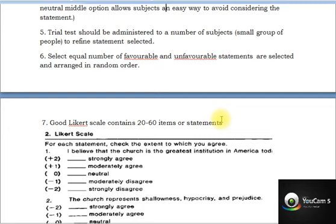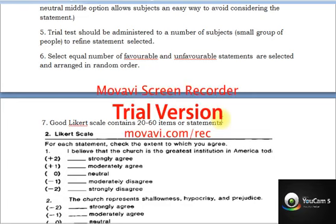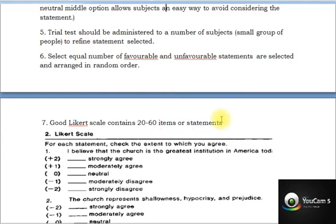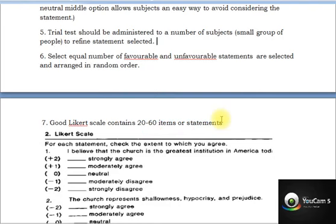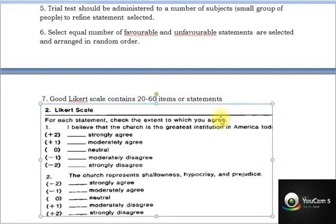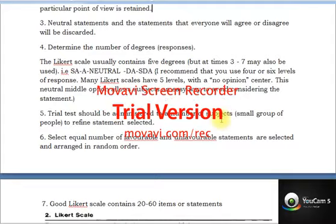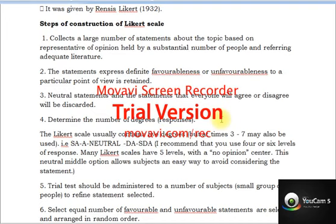A trial test should be administered to a number of subjects before using the scale, to ensure statements are clear and understandable. You may create a statement that is misunderstood by respondents, so a pilot study helps confirm clarity. Select an equal number of positive and negative statements — if preparing 20 items, make 10 positive and 10 negative — so calculations come out well. A good Likert scale should contain a minimum of 20 to 60 items.